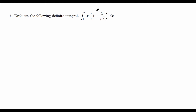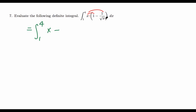So first we need to get rid of this product — we just distribute. This is the same as the integral from 1 through 4 of x times 1, which is x, minus x times 1 over root x.